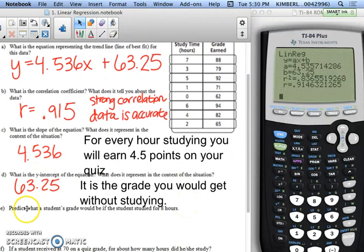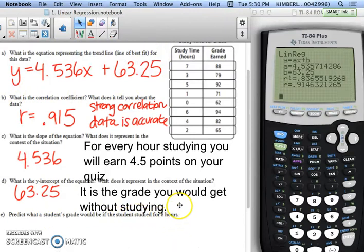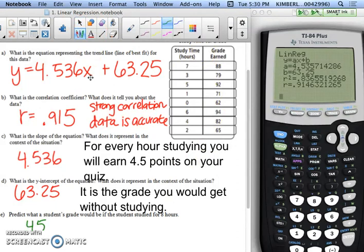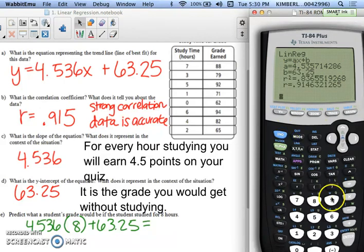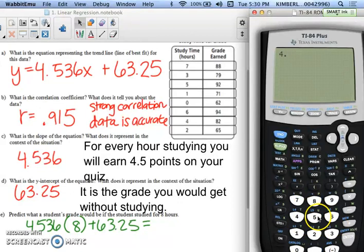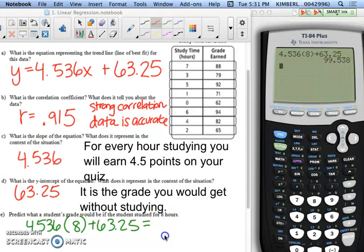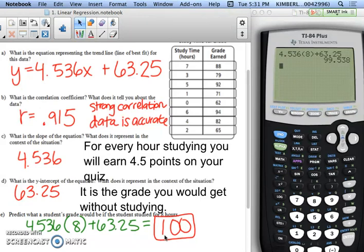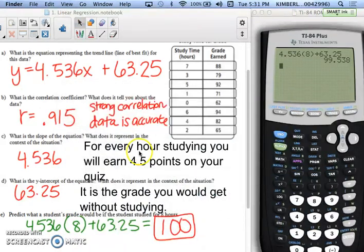Alright, lastly, any time it wants you to predict something, that means you're going to be using this equation that you found up here. So it wants to predict the student's grade for studying for 8 hours, and so I know that hours is my x column, so I need to substitute 8 in for x. Remember when we do that, we substitute with parentheses, so I'd have 4.536 parentheses 8, because I'm substituting it in, plus 63.25. So all you would do is type that in, so 4.536 times 8 plus 63.25. That person should make a 99.53 on their quiz, so let's go ahead and round that up to 100. So if you study for 8 hours, you can expect to get 100.